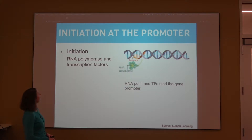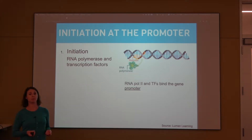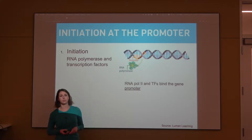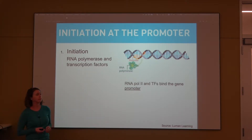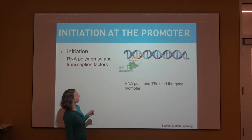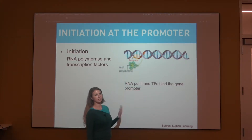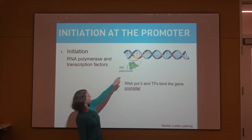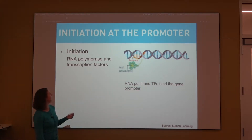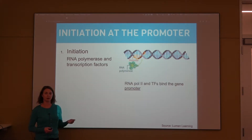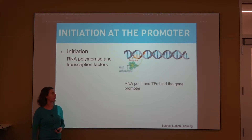With transcription, we have initiation once again, but instead of helicase unwinding the double helix, we have RNA polymerase that binds at the promoter of a gene. Coding genes make up about 1% of our genome, and the way that RNA polymerase can find these genes in our 3 billion base pairs is at these promoter sequences. It's a very sequence-specific recognition, and then other transcription factors will also bind to that region to allow for cell-type specific expression, which enables cells to have their own particular functions.